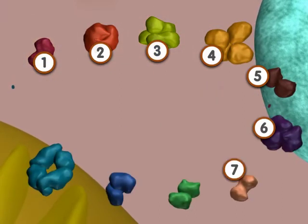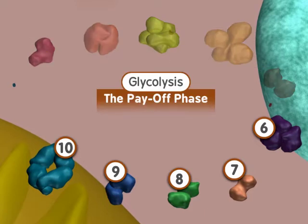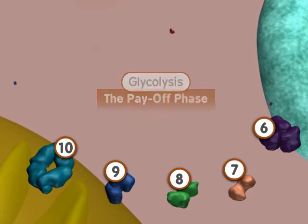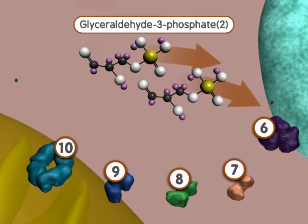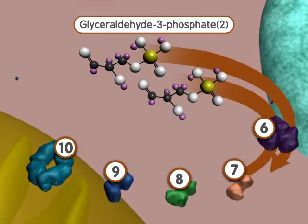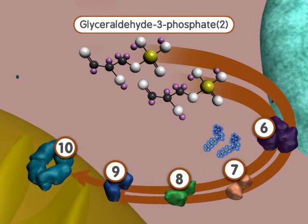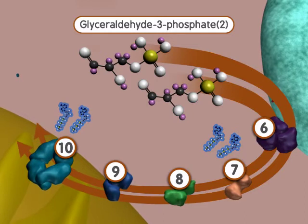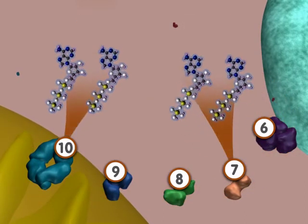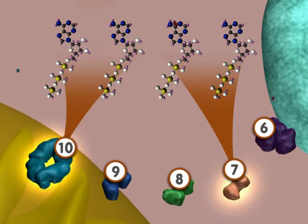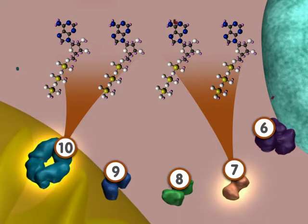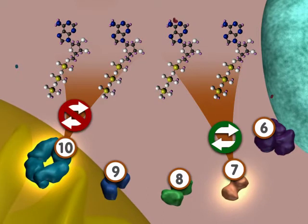The next five steps of glycolysis produce energy. One ATP is made per glyceraldehyde-3-phosphate in both reactions 7 and 10. This means a total of four ATPs are produced in glycolysis. Both of these steps are carried out by a kinase reaction. Note that step 7 is reversible, while step 10 is not.